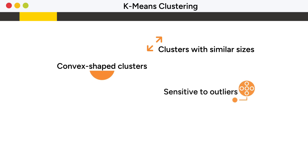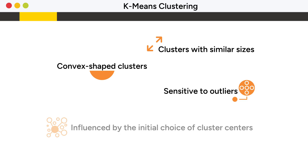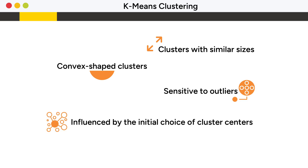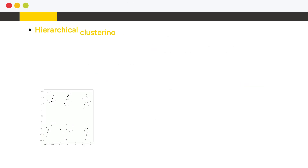However, K-means is sensitive to outliers, and results can be influenced by the initial choice of cluster centers.